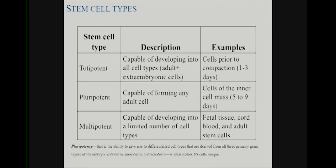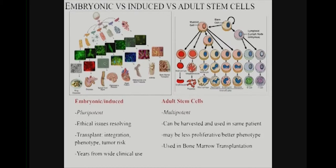As you go down in differentiation you become multipotent, which is more restricted. There are stem cells that can make multiple kinds of cells in a tissue but not all of them and not all tissues. Those are present in all kinds of fetal tissues, cord blood, and adult stem cells also correspond to this. A key distinction: embryonic derived stem cells or induced IPS cells tend to fall into the pluripotent category.